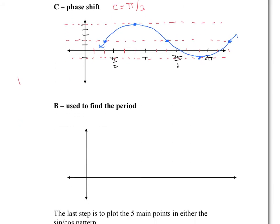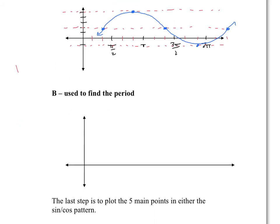The last value to deal with is b equals 2. This is used to find the period. The usual period is 2π, and if b equals 1 the period is 2π. But with b equals 2, you divide the period by 2, and the period becomes π. So instead of having a period of 2π, the full period happens within π — it's compressed.